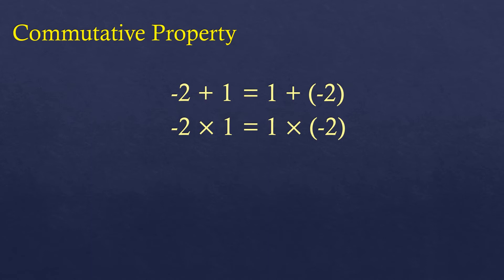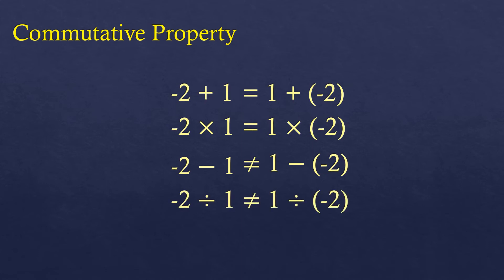But for subtraction, the result will be different. Negative two minus one is negative three, while one minus negative two is positive three, so they are not equal. The same is true for division. So commutative property is only true for addition and multiplication for the set of integers.